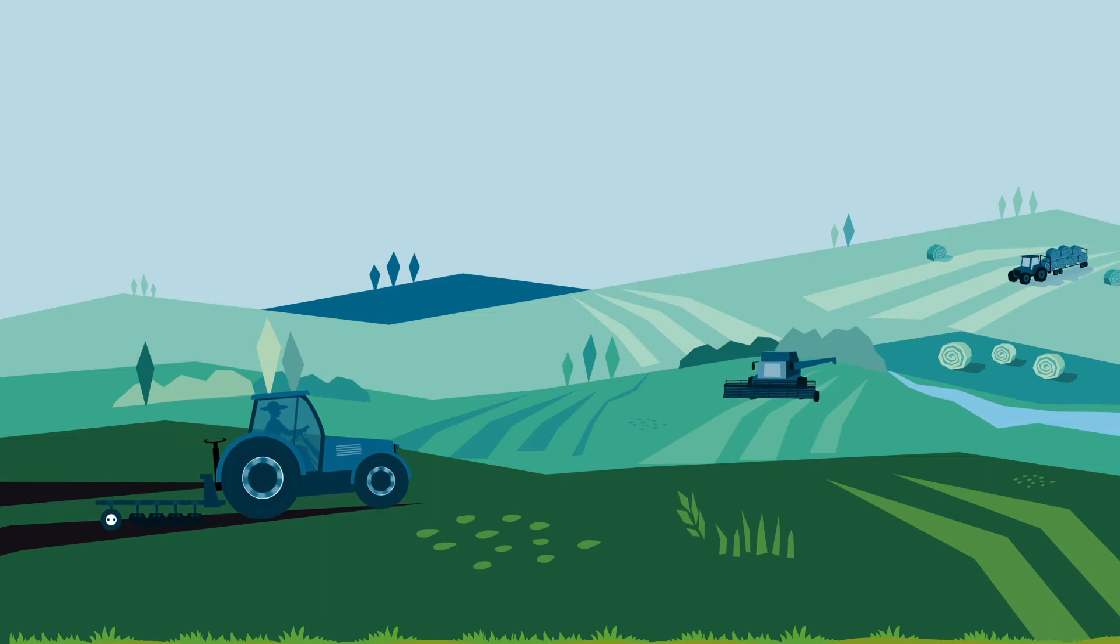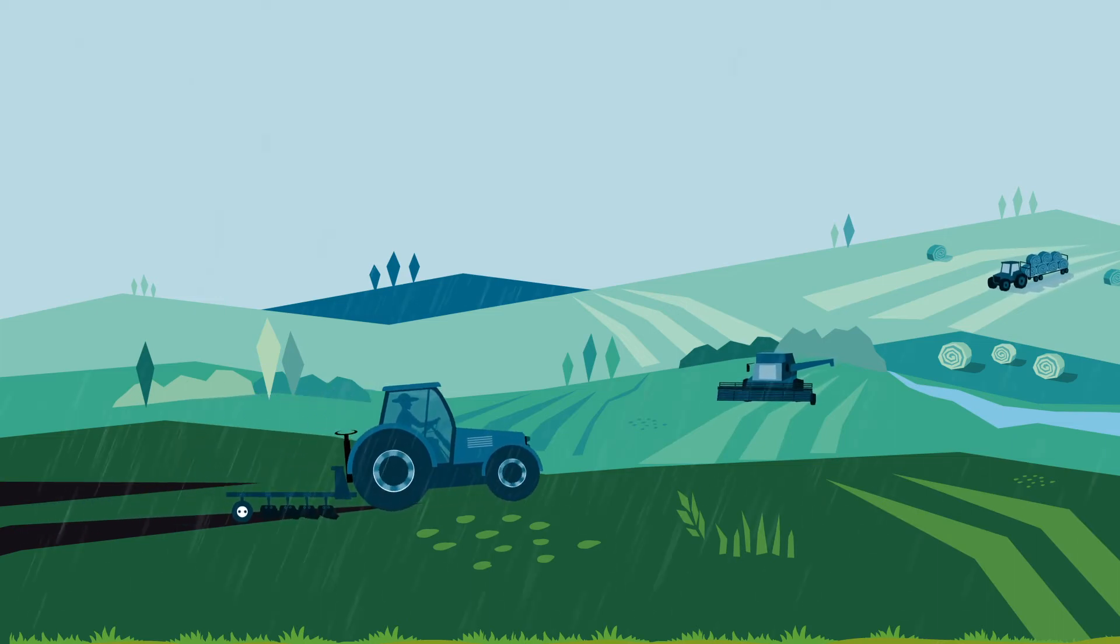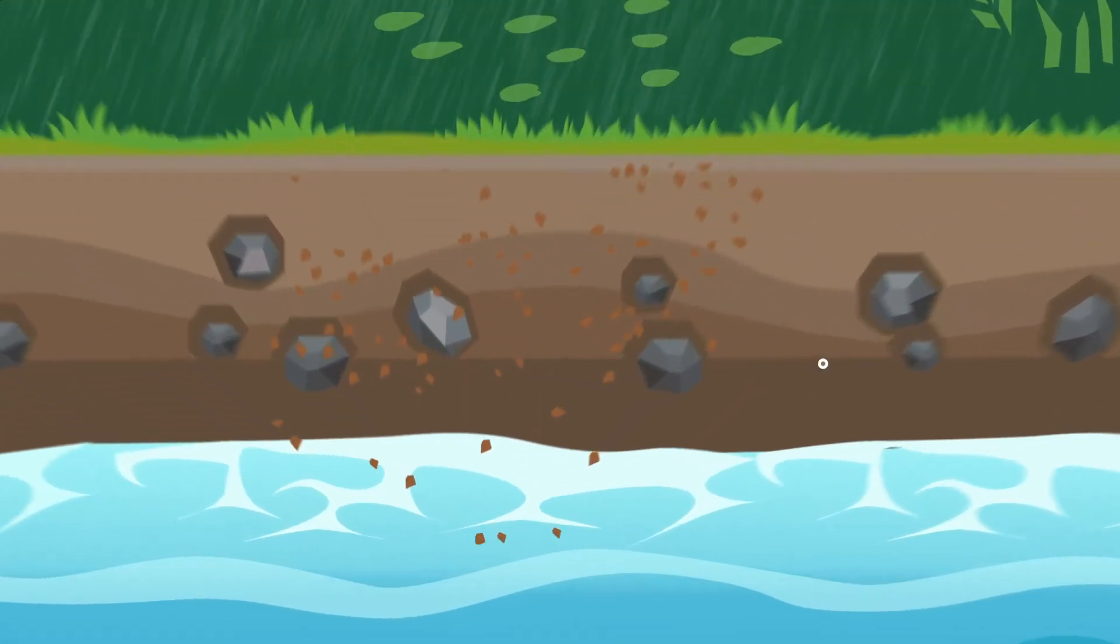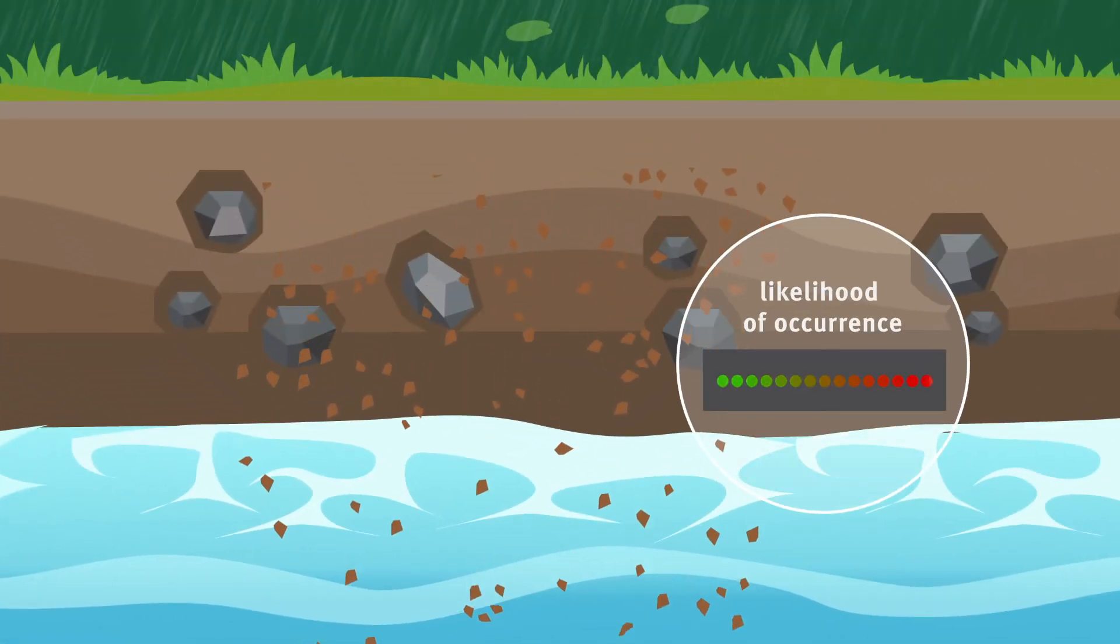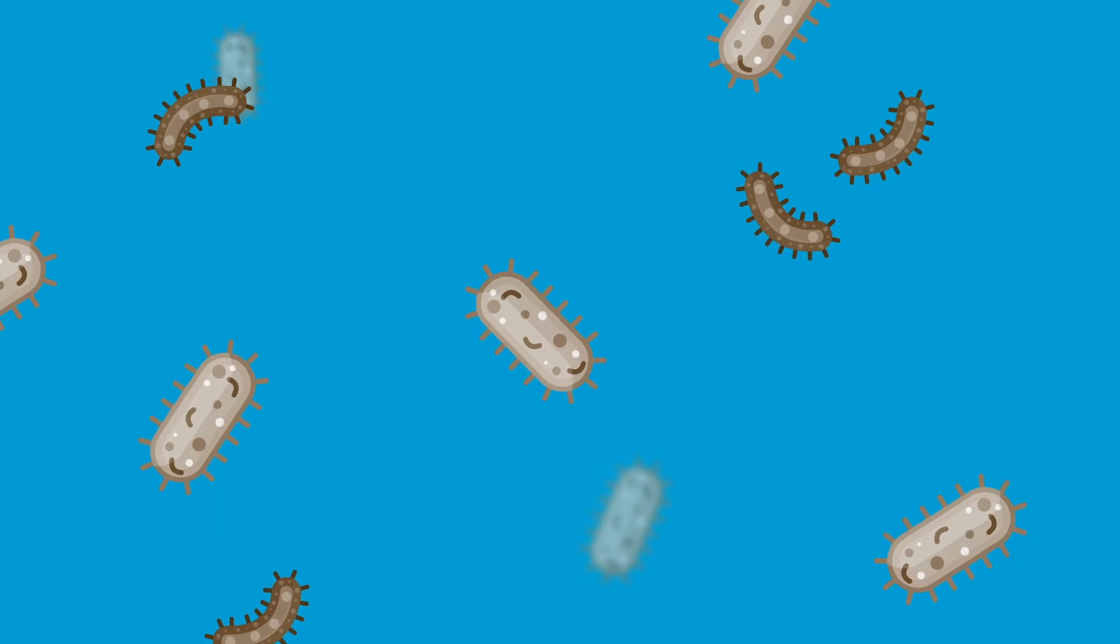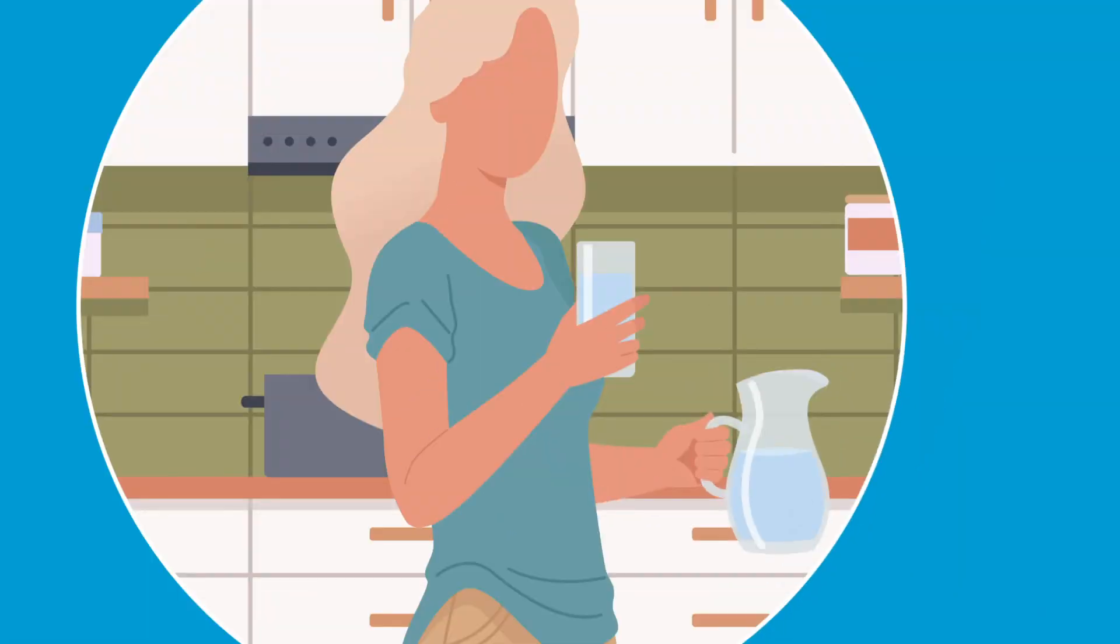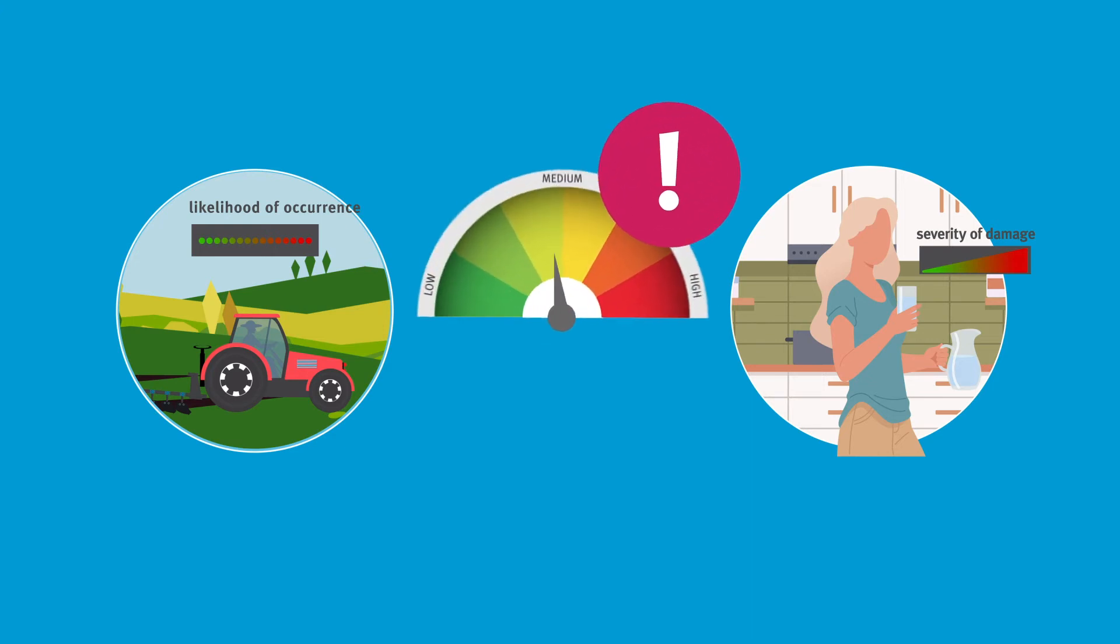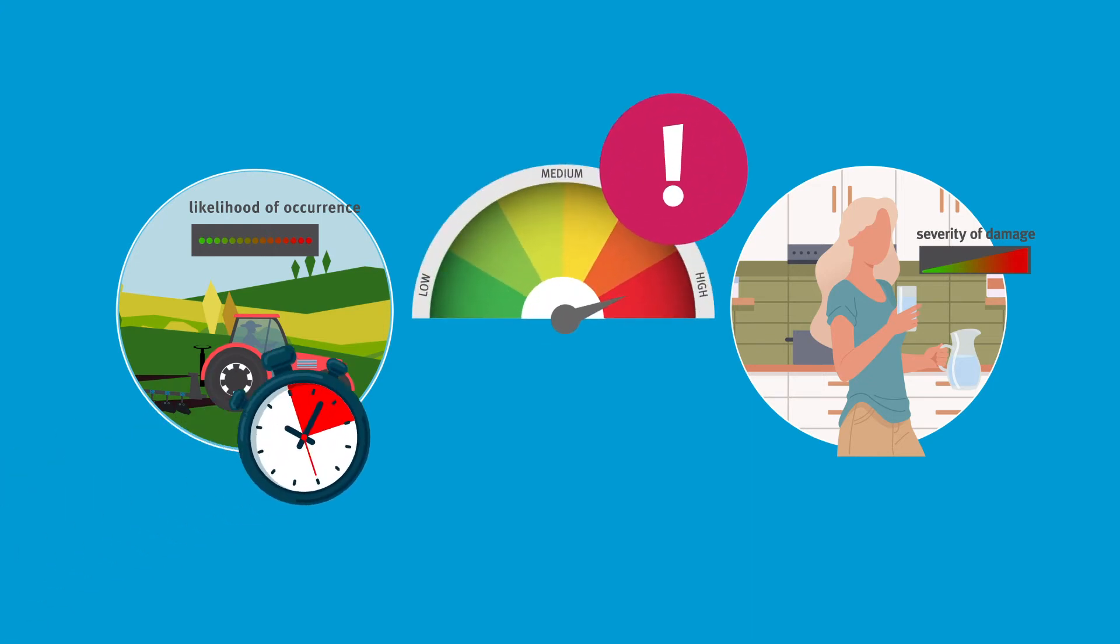For example, the regular application of liquid manure as fertilizer and leakage of such manure after heavy rains has a frequent likelihood of occurrence. The health of the population can be directly affected by pathogen intrusion, and therefore this has a potentially high severity of damage. Accordingly, there is a high risk to our drinking water here that needs to be addressed in a timely manner.